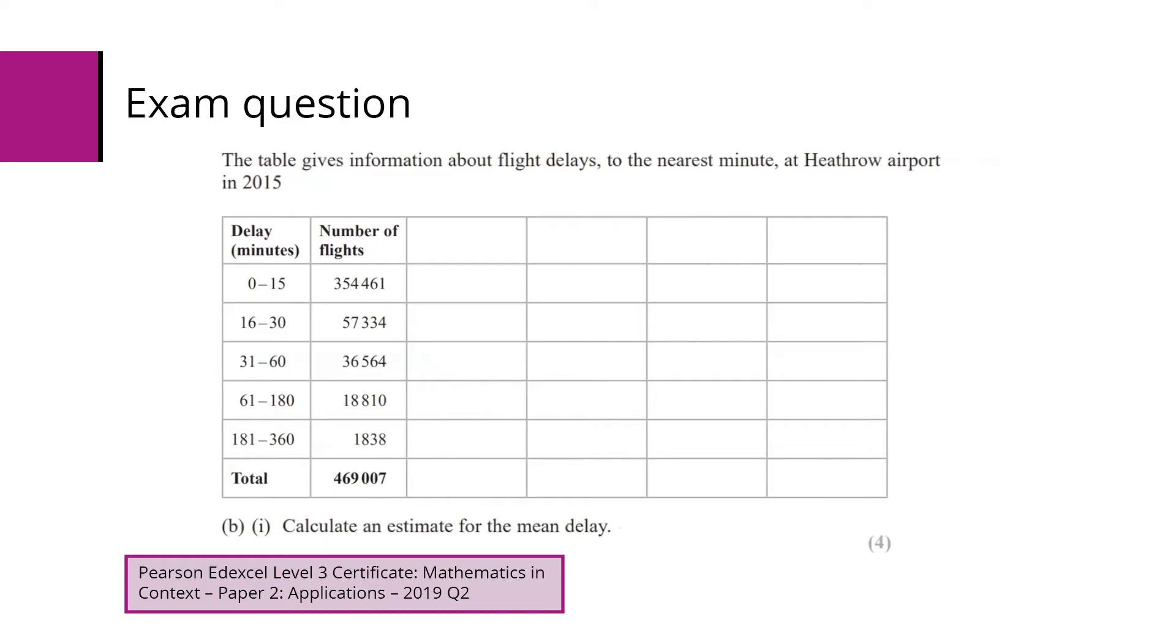It is recreated here for them to use in table form, and you can see that part (b)(i) says calculate an estimate for the mean delay. Now there's a lot of columns here and that often throws people off; they're not sure what to do with all of them, so I'll show you how I would use them.